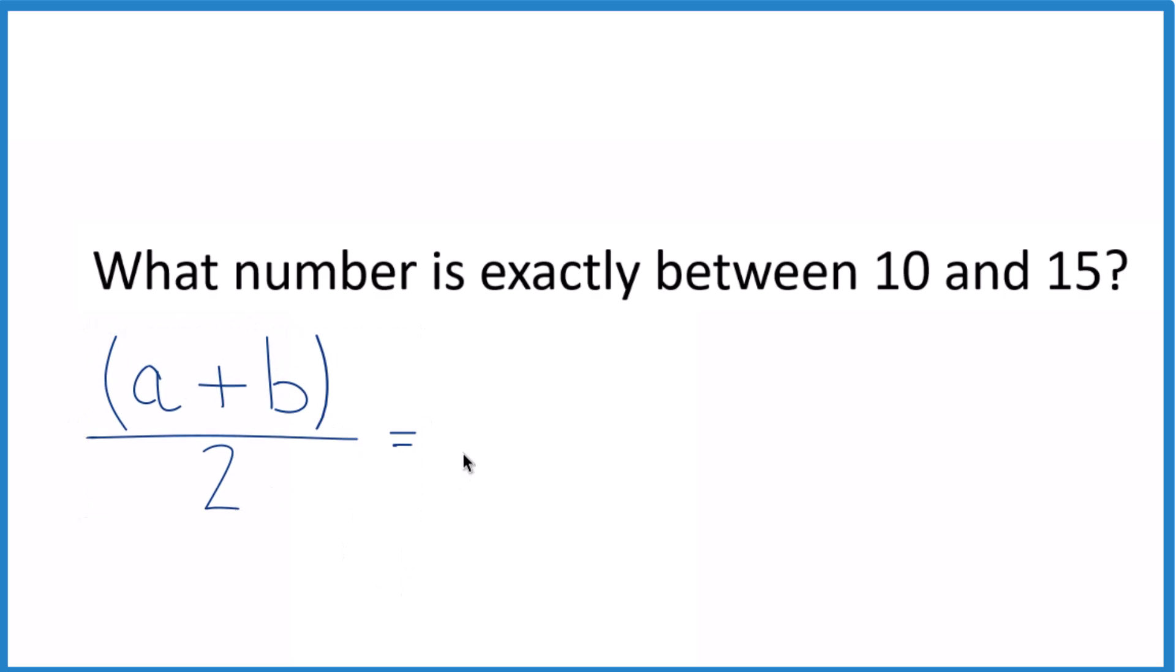A plus B divided by 2 would tell us what number is exactly between 10 and 15. So A, that'll be 10, and then B will be 15. So we have A plus B, that's 10 plus 15, and we just divide that by 2.